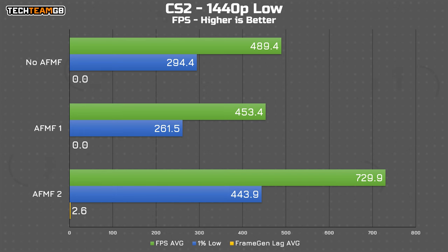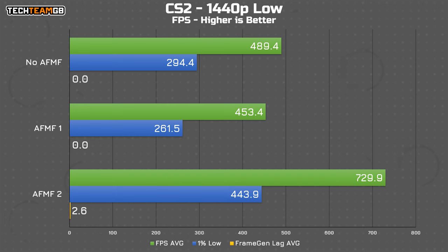Although AFMF1 did say it was active in the driver — unlike before when it said it just wasn't supported — AFMF2 did work, pumping the FPS way up from around 500 FPS to 730 FPS. Even more impressively, the frame generation lag was only 2.6 milliseconds. Compare that to the 11.2 milliseconds from the last round of testing, and that's mighty impressive. Plus, it actually showed a performance improvement here, which is great news.